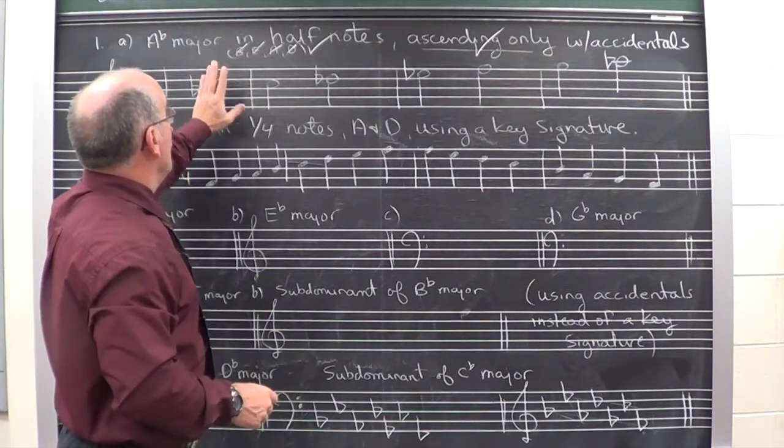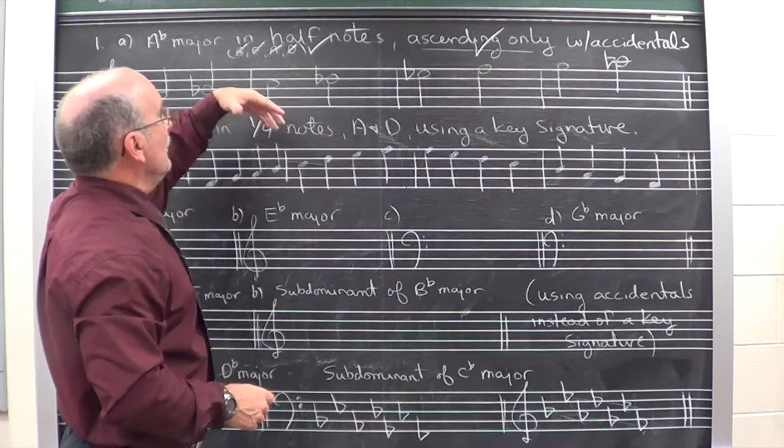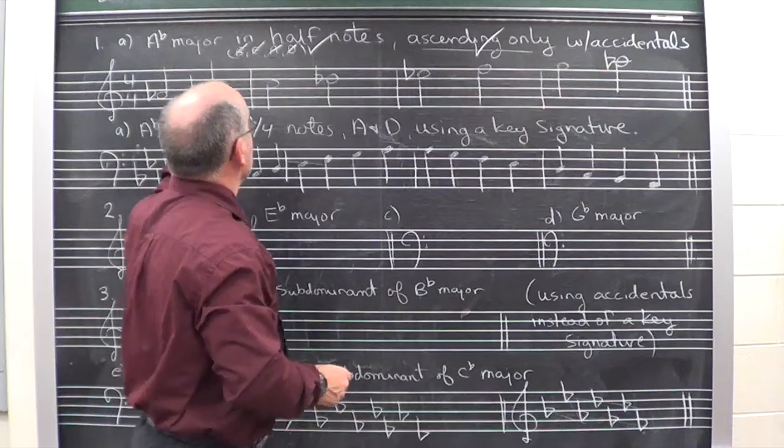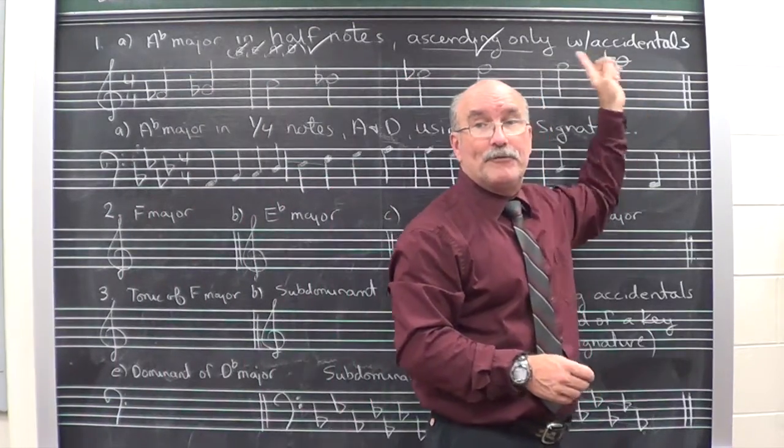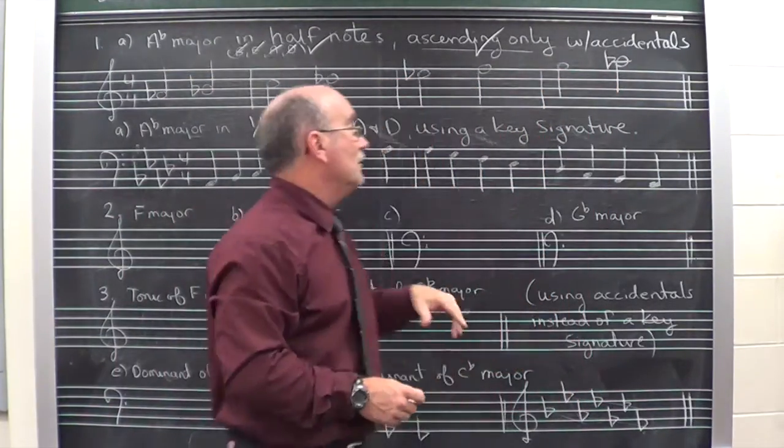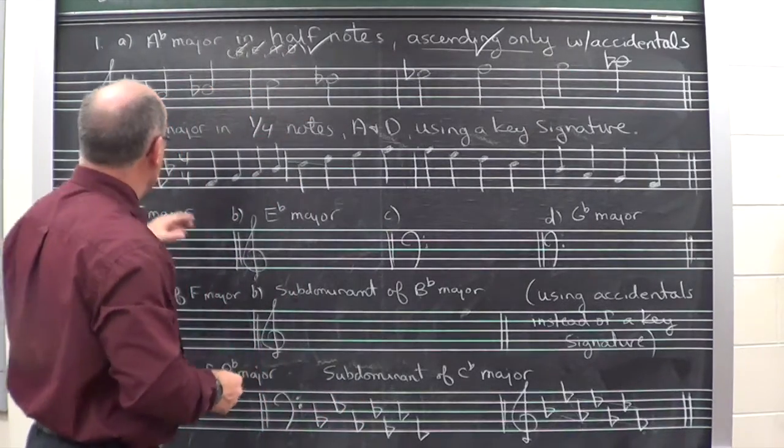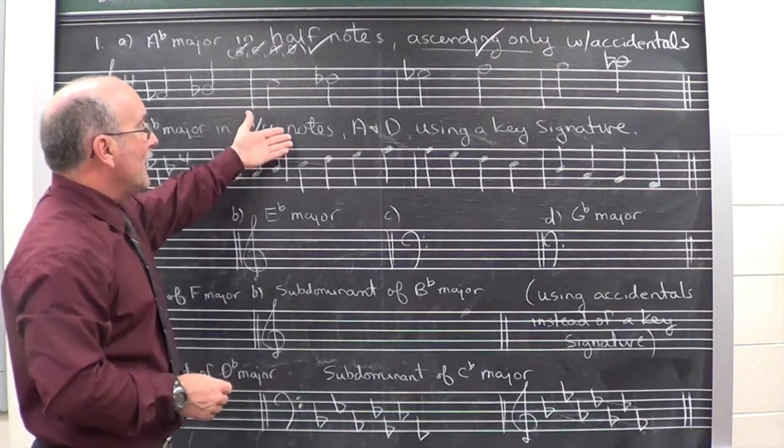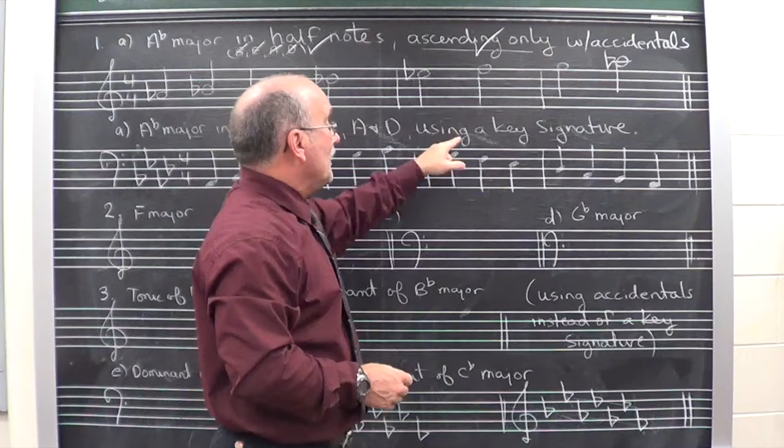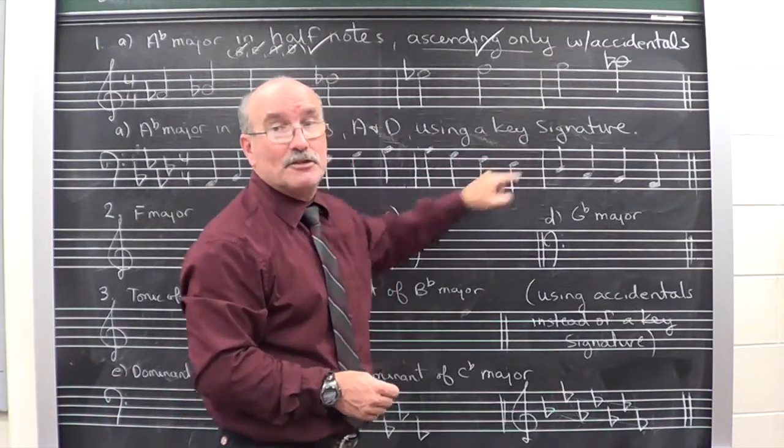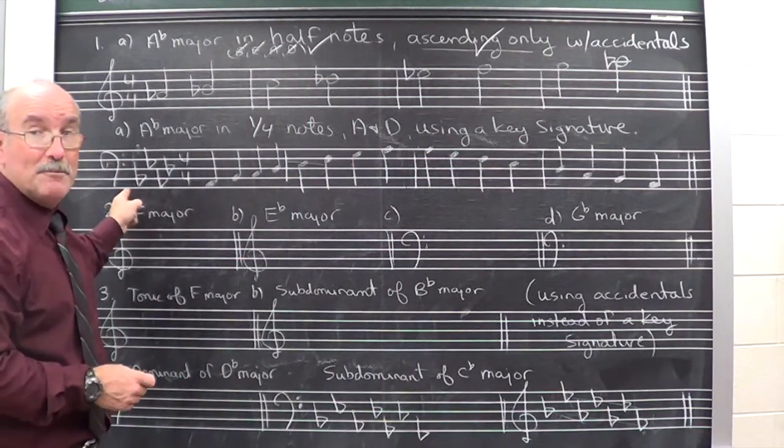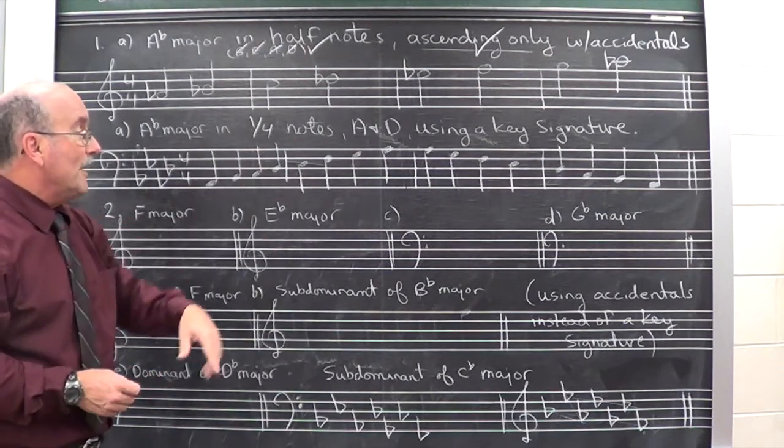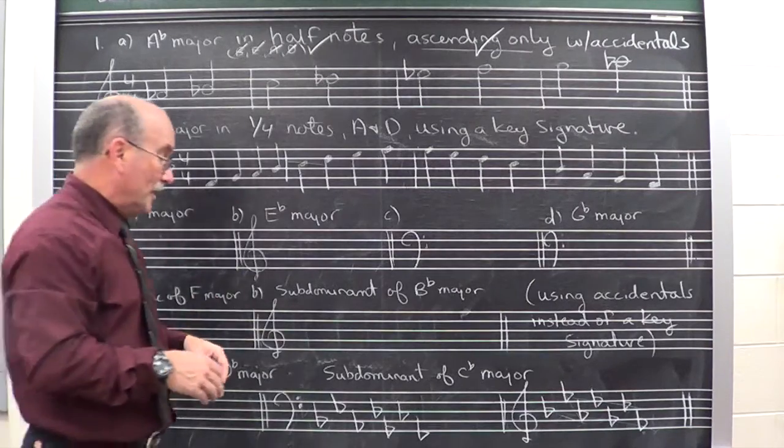So, the two types of questions you could be asked. Write the scale in ascending form or descending form half notes using accidentals, putting in the sharps or flats that are appropriate for the key indicated. You write them right into the scale. Then there's the second type of question which asks you to write it again, some type of note value, either ascending, descending or both, and then using a key signature. As long as you observe the clef at the beginning, you'll write the key signature hopefully correct. And then write it ascending and descending. You do not need to write in the accidentals.